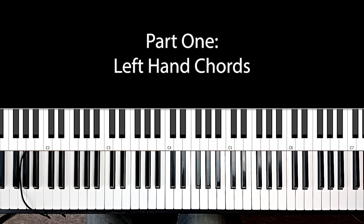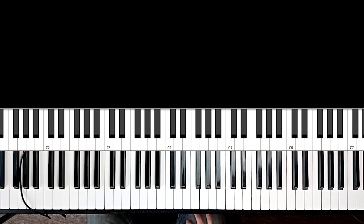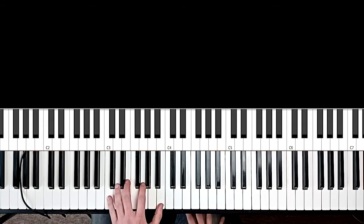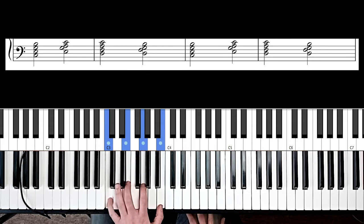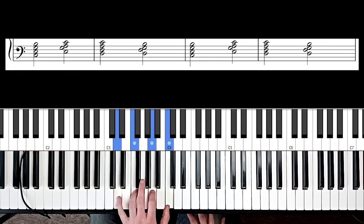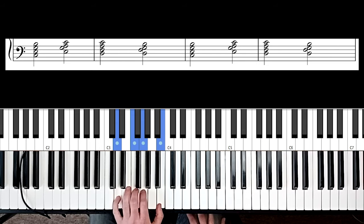So first we'll do the chords in the left hand. We're using a mix of root position and second inversions in order to make these nice and easy to play, so our left hand doesn't have to move too much around the keyboard. So first we've got C major in root position, and then the A minor in second inversion, and the D minor 7 which is in root position again, and then the G dominant 7 which is in second inversion.